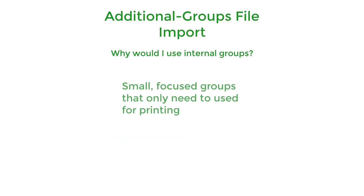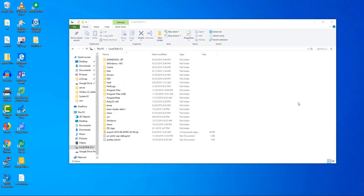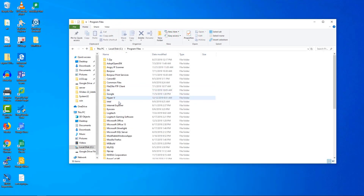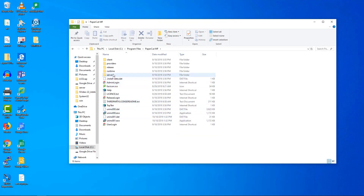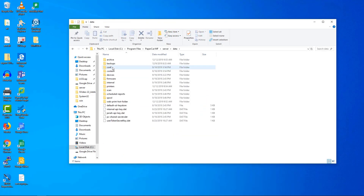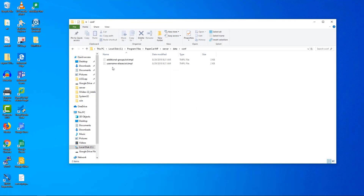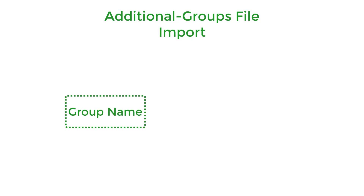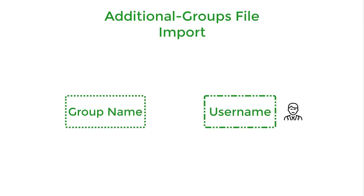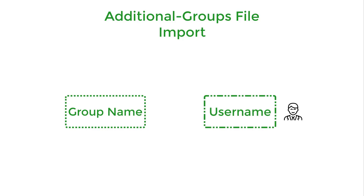Additionally, you can use this to create small, specialized groups that only need to be referenced within PaperCut. Formatting is very straightforward. You can see examples of how to format the text in the additionalgroups.text.tmpl file located in these directories. The additional groups file allows you to specify group names and membership for those groups. To add users to groups via the additionalgroups.text file, simply specify the group name, followed by the user name that you want to be a member of that group. You can separate these values by either a colon or a tab.